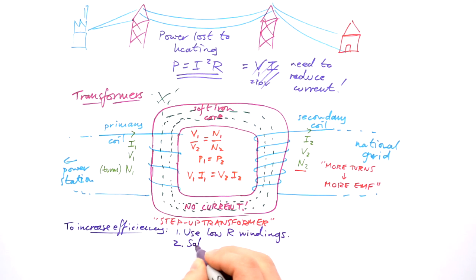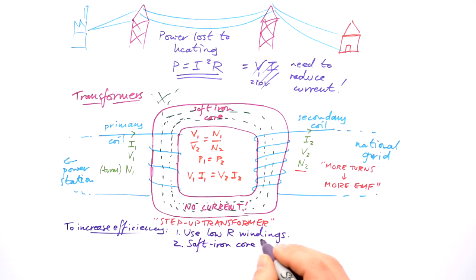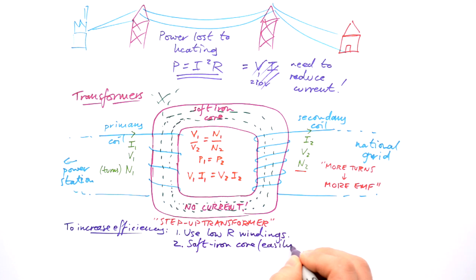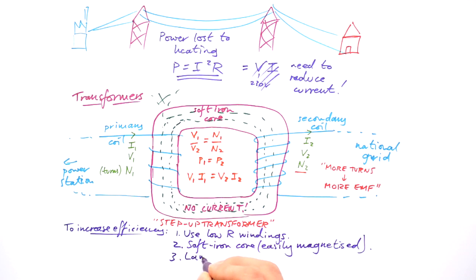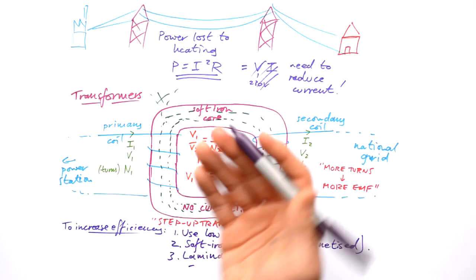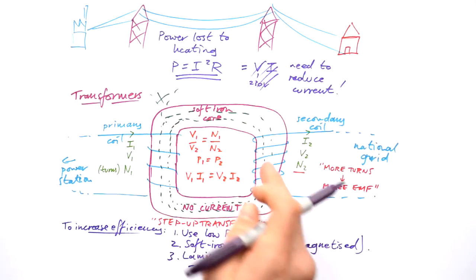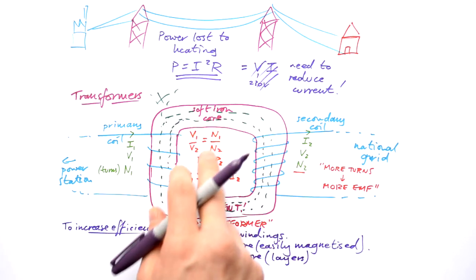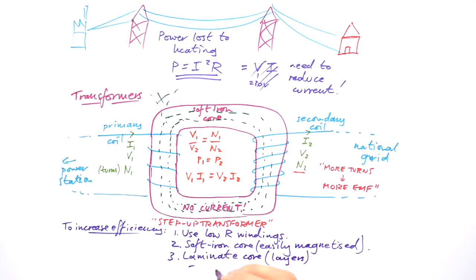We can use this soft iron core, easily magnetized. Finally, we can laminate the core. That basically means layers. What we do is we chop the transformer into lots and lots of squares like this and then put them all together. And that actually reduces eddy currents.